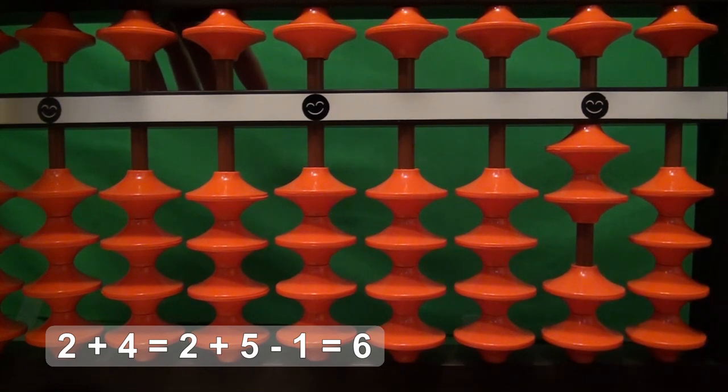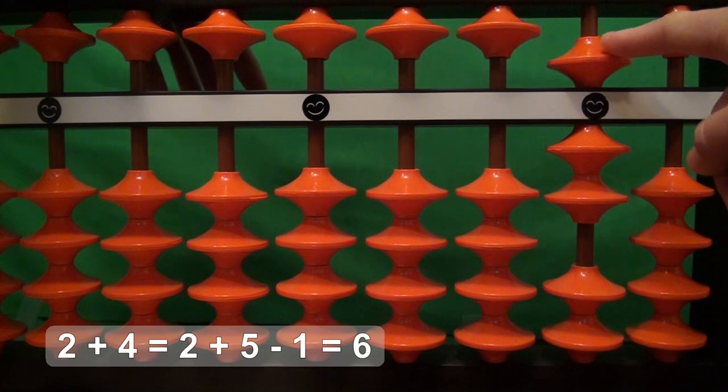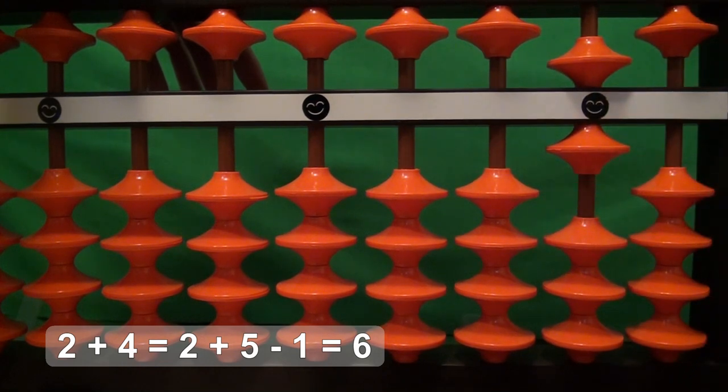We add four by adding five and taking away one. Adding five and taking away one is equivalent to adding four, and so we have our answer: six. Two plus four equals six.